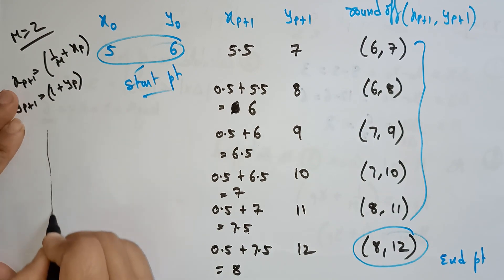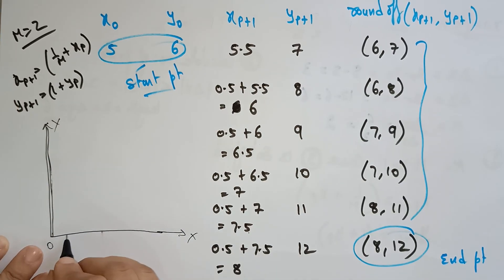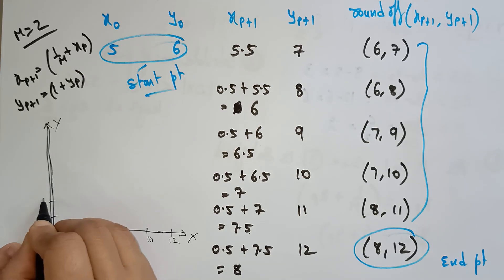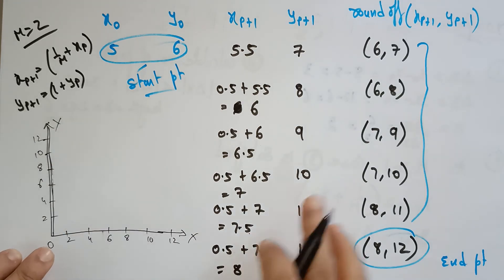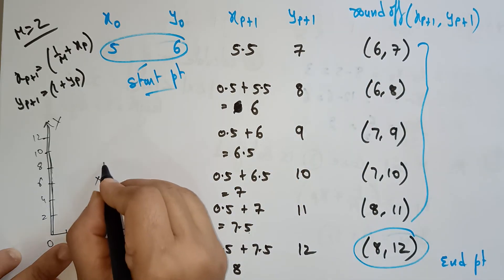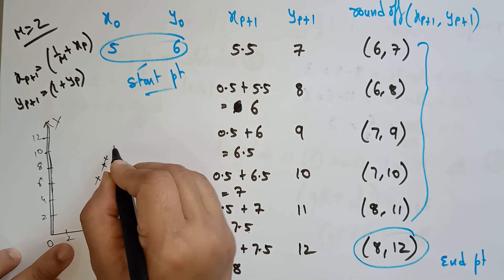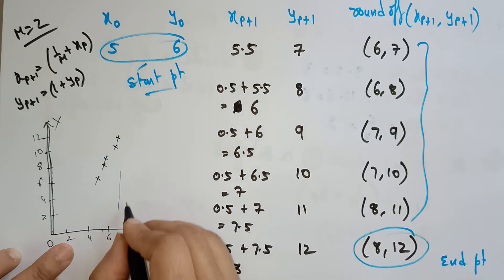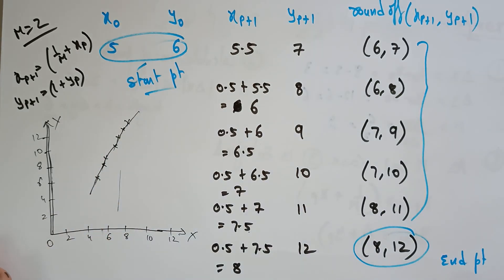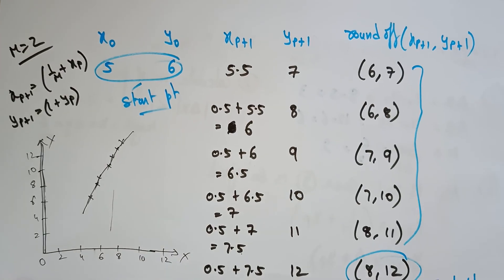Now let's draw the diagram. Plotting the x and y coordinates on a grid with values up to 12, we mark each of the calculated points: (5,6), (6,7), (6,8), (7,9), (7,10), (8,11), and (8,12). Connecting these gives us the line drawn using the DDA Digital Differential Analyzer algorithm. Thank you.